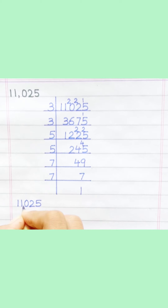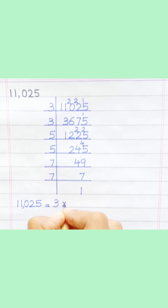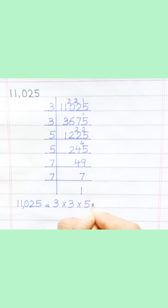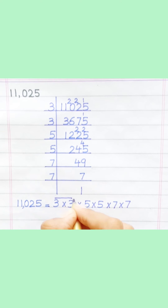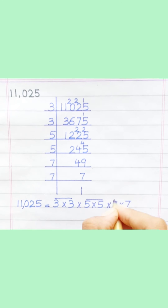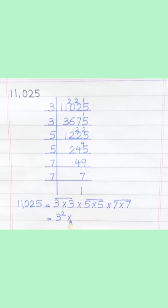Eleven thousand and twenty-five is equal to three multiply three, multiply five, multiply five, multiply seven, multiply seven. Eleven thousand and twenty-five equals three squared, multiply five squared, multiply seven squared.